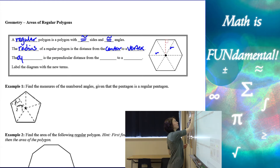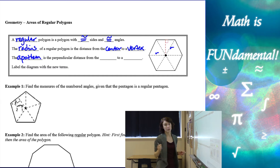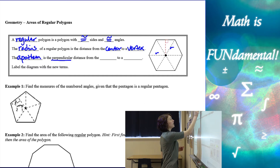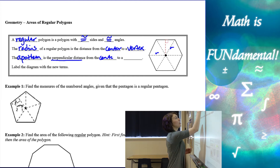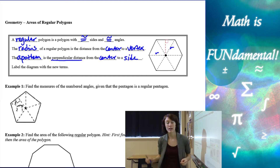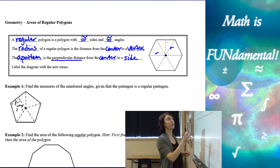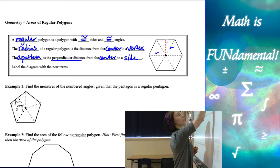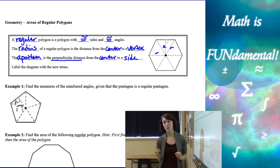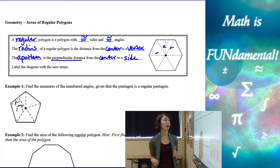Now the apothem — which is definitely a new term — is the perpendicular distance from the center to a side of our regular polygon. So not to the vertex, to the side. This little line here would be the apothem. You can think of it like the height of each one of those little triangles.